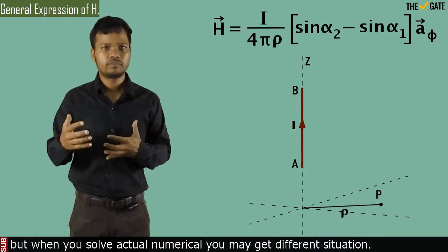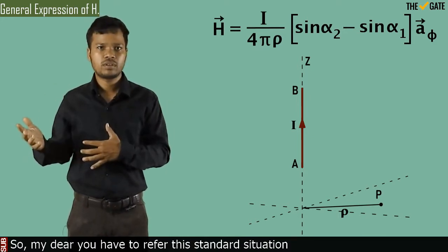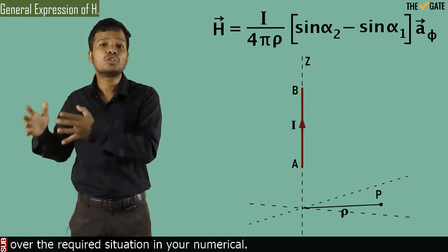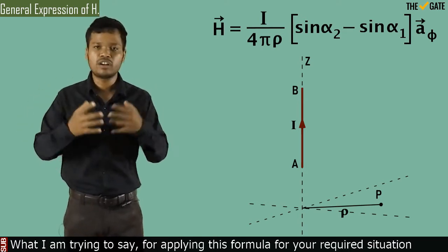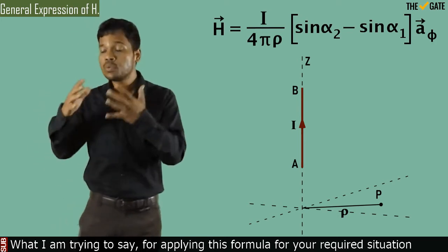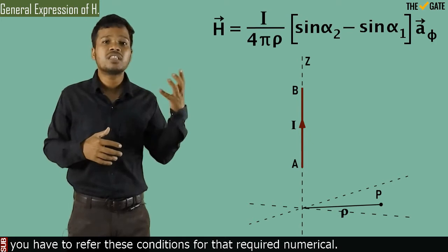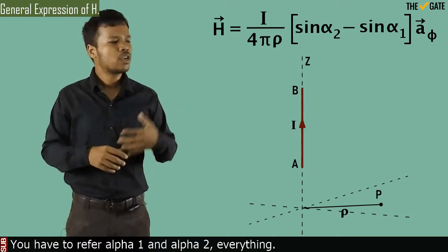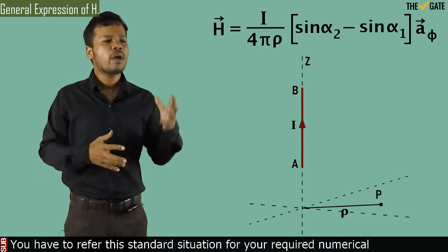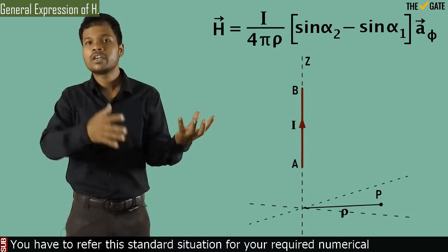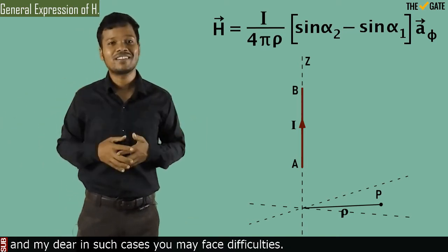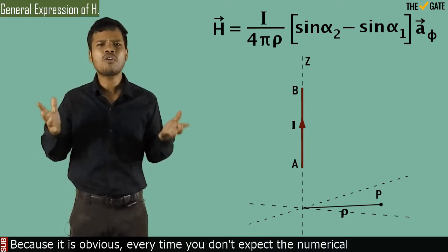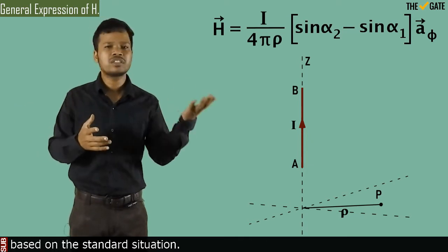But when you solve actual numericals, you may encounter different situations. You have to refer this standard situation over the required situation in your numerical. For applying this formula to your required situation, you have to refer these conditions for that required numerical. You have to refer the perpendicular distance rho, alpha 1, alpha 2 — everything. You have to map this standard situation onto your required numerical.